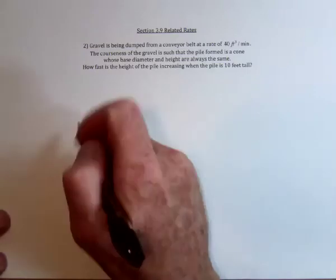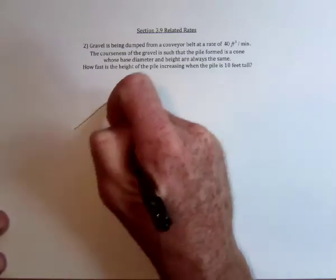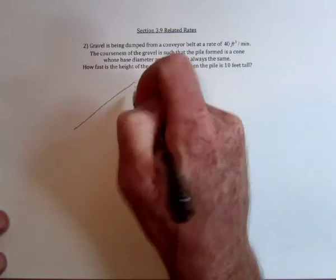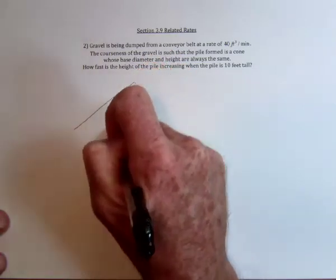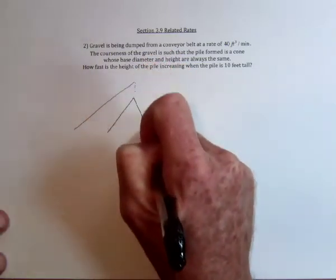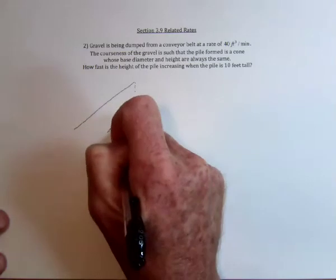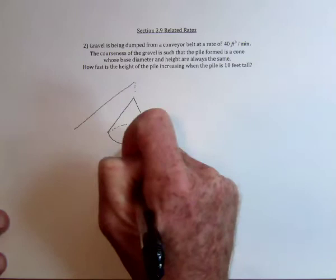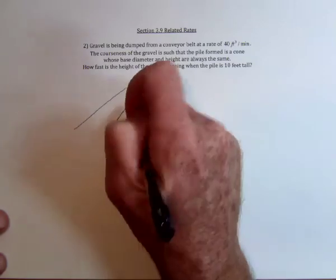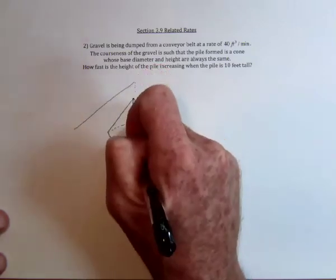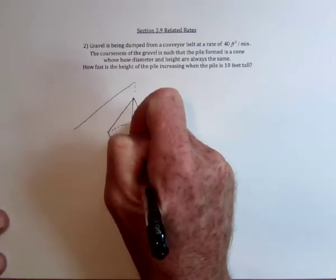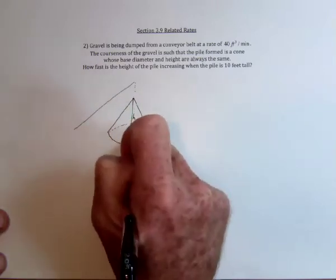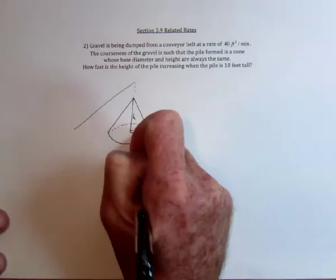The gravel is going up this conveyor belt, dumps down, and then the pile turns out to be a cone. So it's got a round base and then it's got a height which is perpendicular to the radius which is in the base.